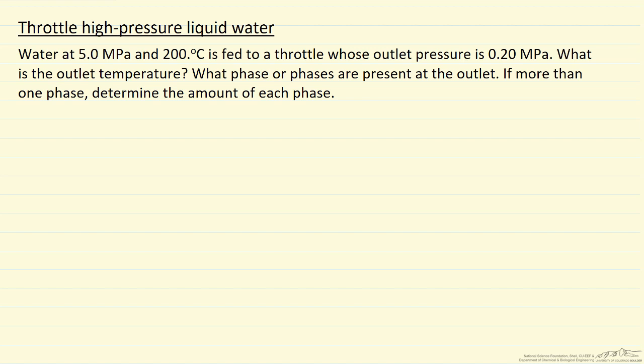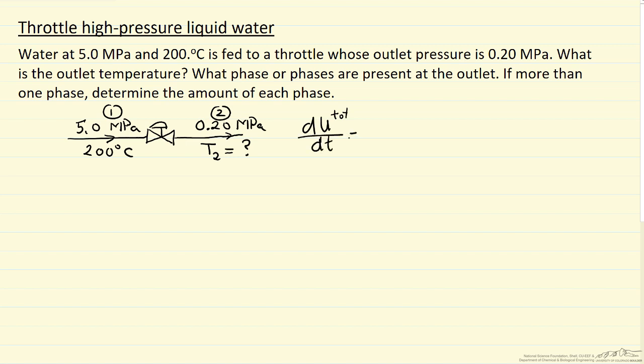So first thing is to draw a simple diagram to represent the process, we can then write the general first law for simplifying, namely the change in the total internal energy with respect to time is equal to, in fact we have mass flowing in and that has enthalpy per kilogram and mass flow rate out, enthalpy out and then Q and W.